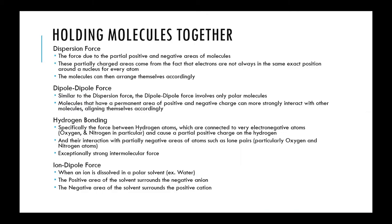At any given time, there will be one part of a molecule that has a little more electrons than the other side, creating a minor dipole in the molecule itself — one area of positive charge, one area of negative charge. In bulk, if there are trillions of molecules, they can orient themselves to align the positive and negative ends that are continually changing. This is also one of the weaker intermolecular forces.